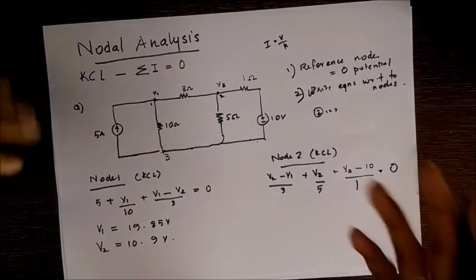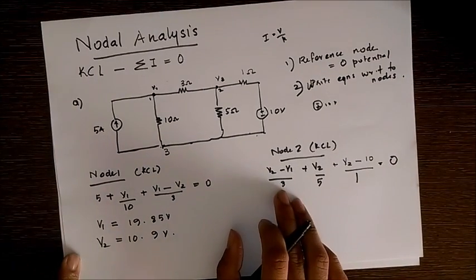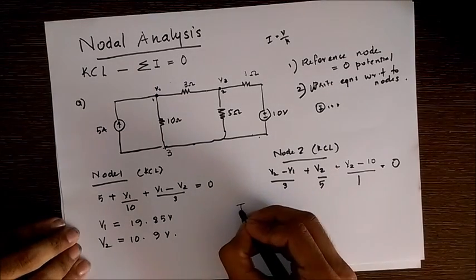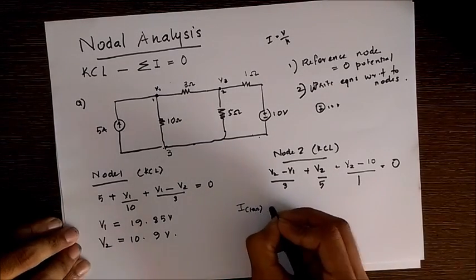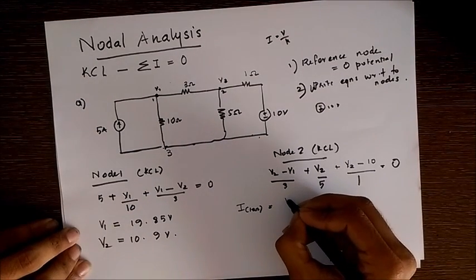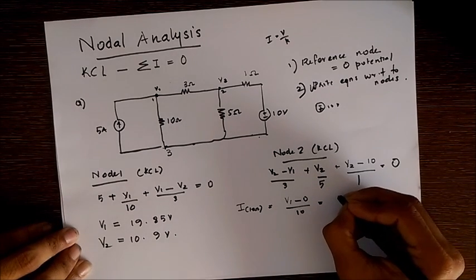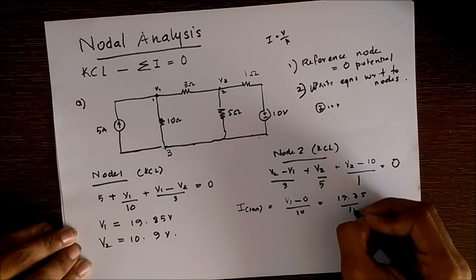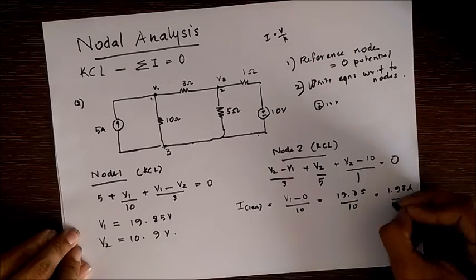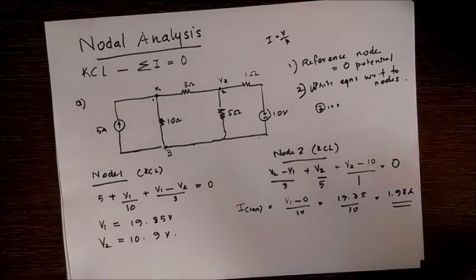We can find whichever circuit current or branch current or voltage we want with these values. For instance, I will find the current across this 10 ohm resistor. I of 10 ohm is V1 minus 0 by 10, which is 19.85 by 10 equals 1.98 amperes. Like this you can find any branch current.